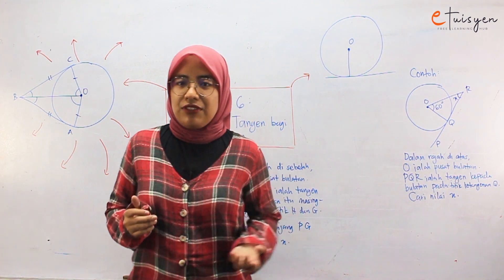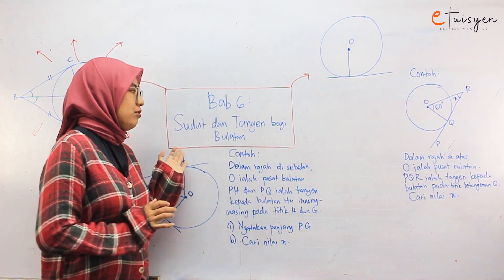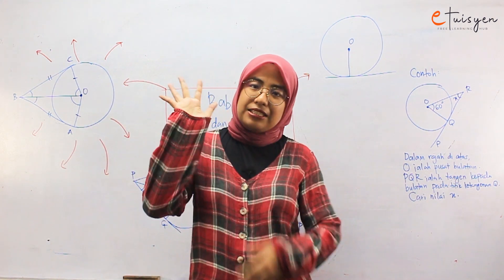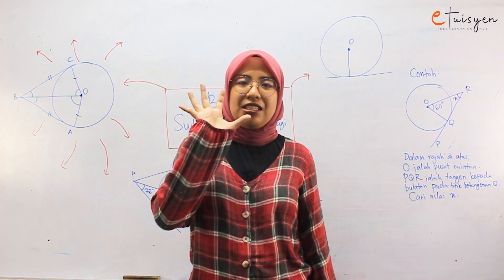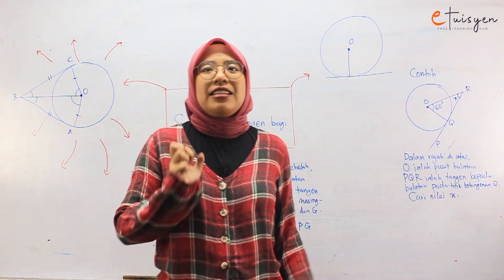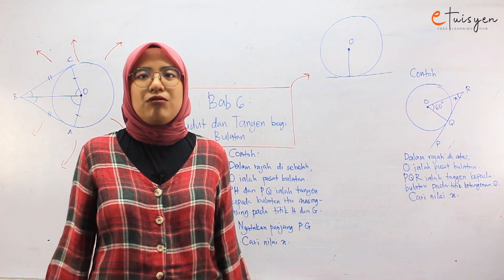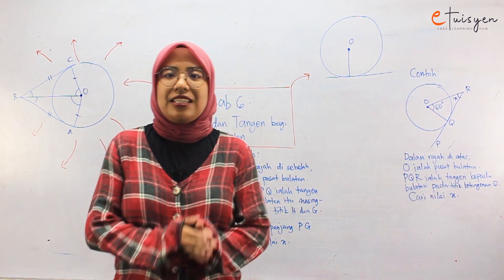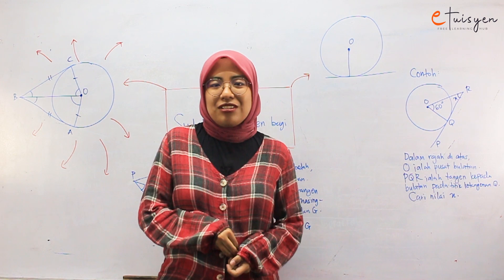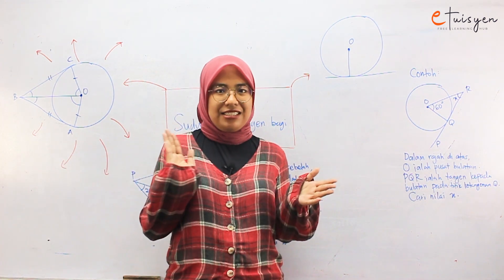So in the previous video, ada dua video tentang chapter ni, iaitu sudut dan tangent bagi bulatan. Kita dah bincangkan lima ciri bulatan yang kita dah bincangkan. So kita akan continue. So this video will be the last video untuk kita terangkan tentang teori, tentang introduction, tentang apa yang korang kena fahamkan. So lepas ni, kita akan fokus kepada latihan sahaja.